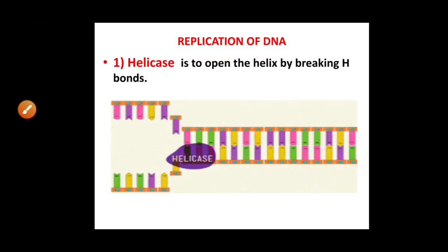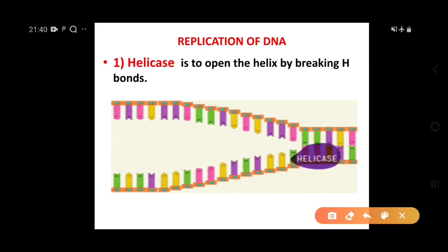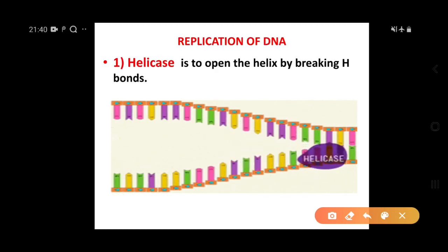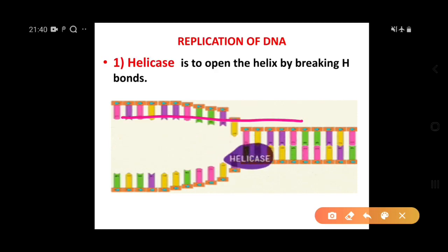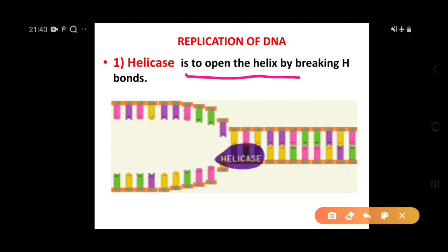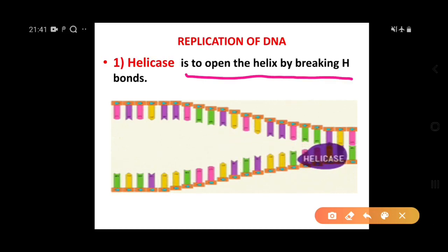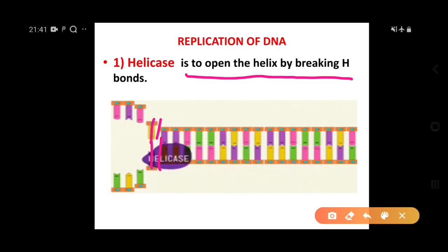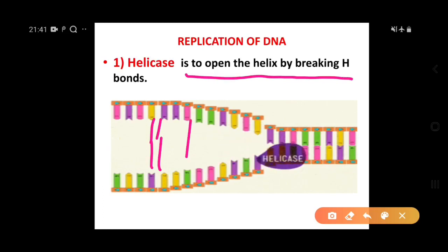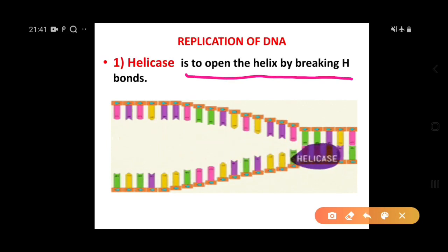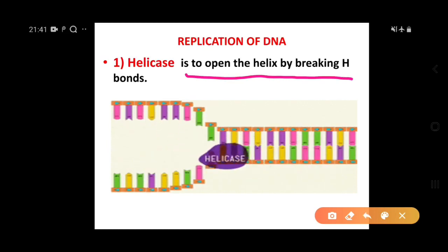The first enzyme required is helicase. Helicase unwinds and separates the two strands of DNA. Its function is to open the helix by breaking hydrogen bonds between the nitrogen bases — A-T pairs are joined by double bonds and G-C pairs by triple bonds. So helicase breaks these hydrogen bonds and separates the two DNA strands.